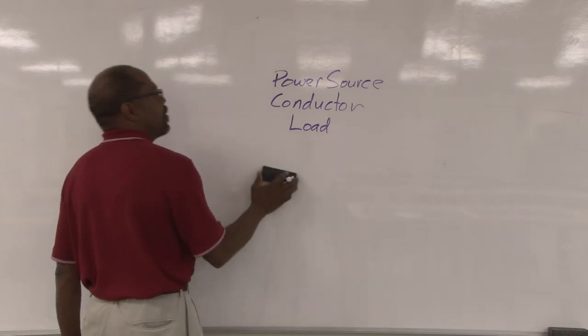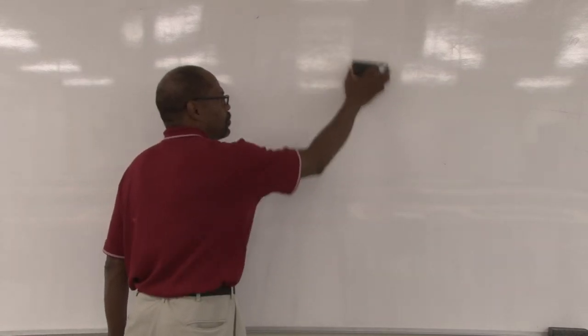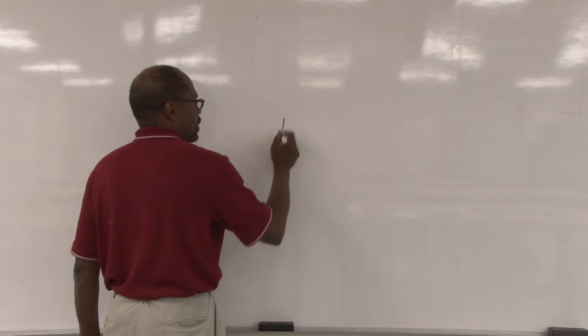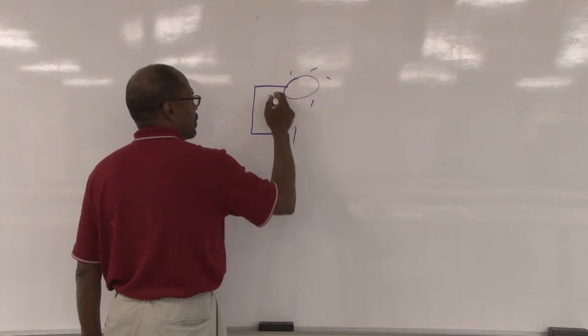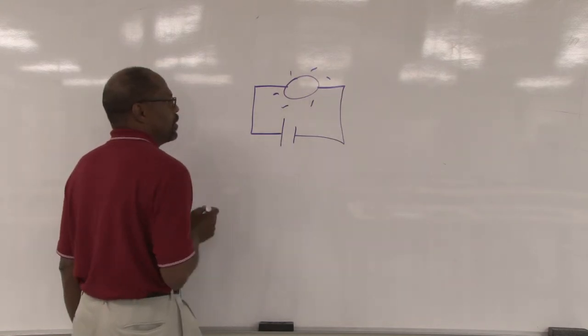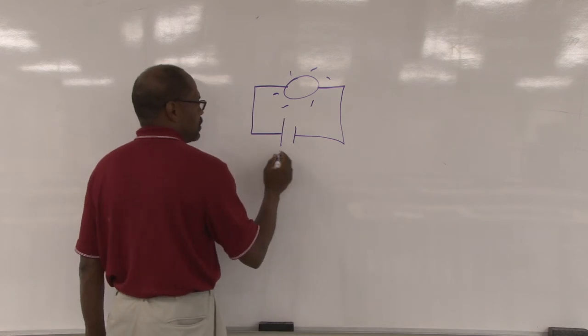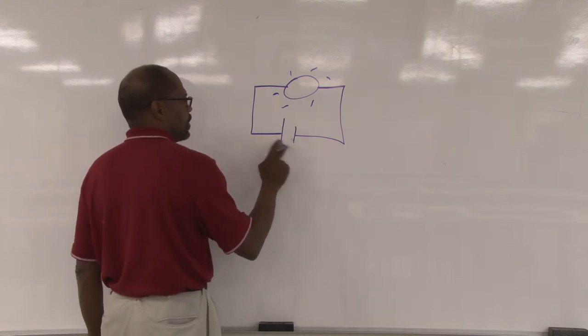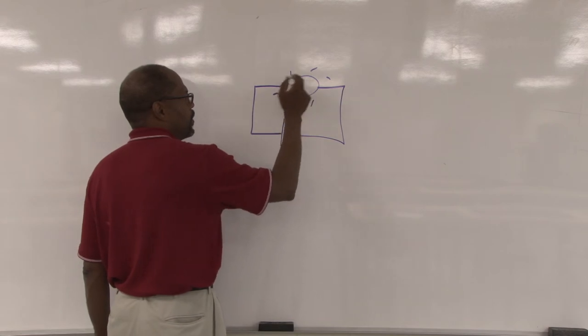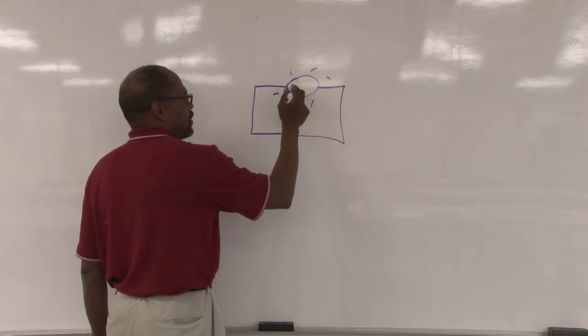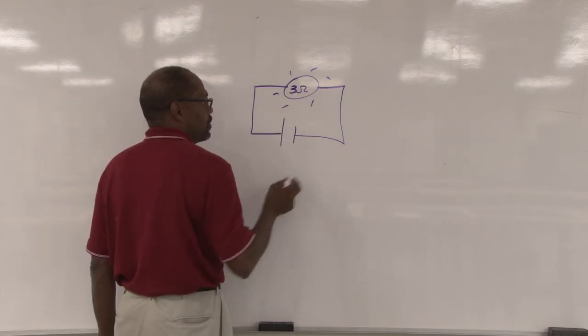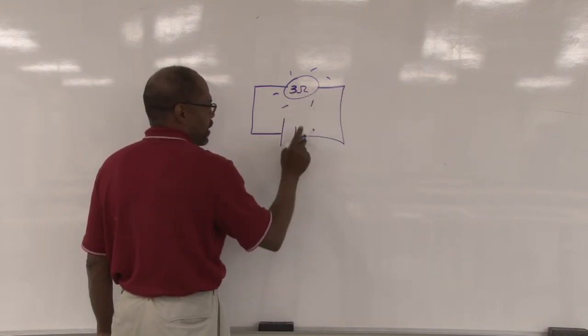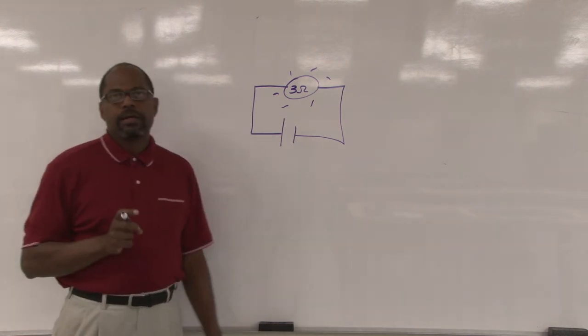To give you an example of that: if I took a battery, went to a light bulb, came back out—the power source is here, the conductors going around, the load has some type of resistance, let's say three ohms of resistance, then it comes back. That would be a circuit.